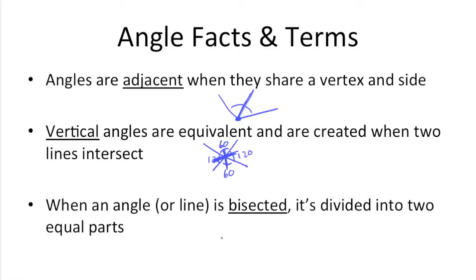When an angle or a line is bisected, it's divided into two equal parts. So we have an angle here. Let's say this line segment bisects this larger angle. That means that these two angles have to be equal. We have a line, and let's say this vertical line bisects this horizontal line. That means that this and this, these two line segments, are of equal length.